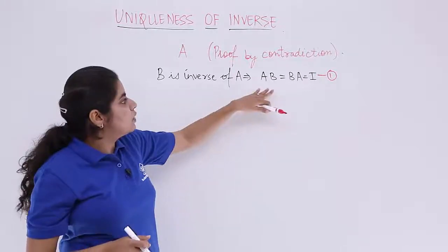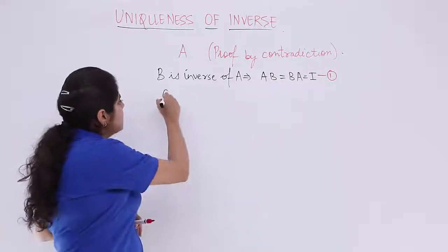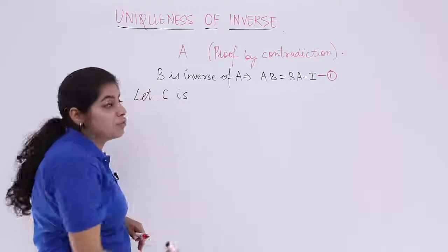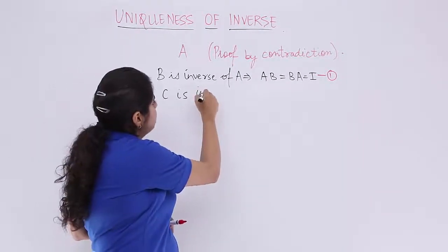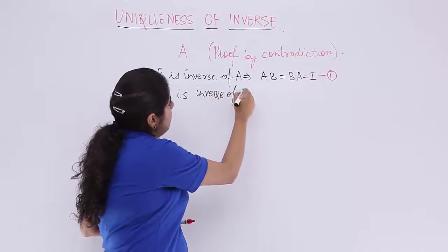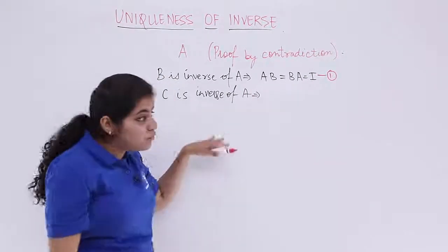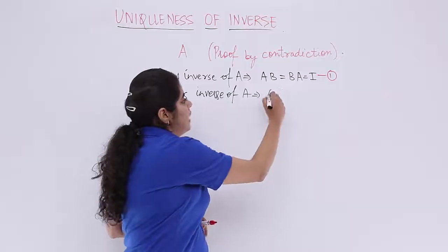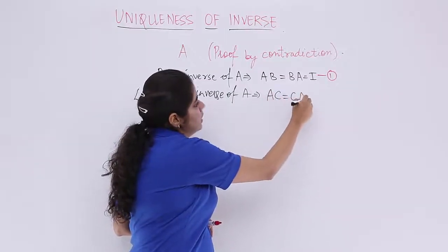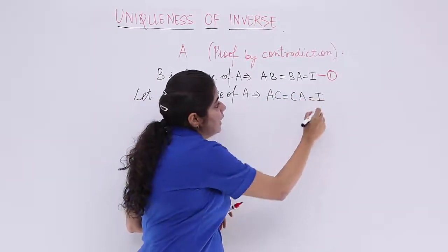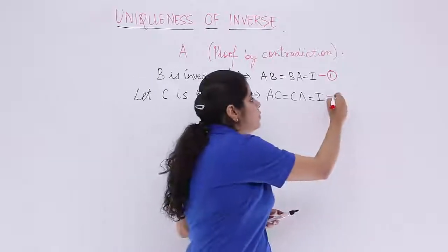B is the inverse of A, and I say let C also be the inverse of A. If C is inverse of A, then AC is equal to CA is equal to I, and this is my equation number 2. This we know, there is no confusion in this.